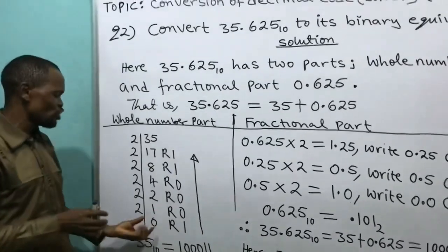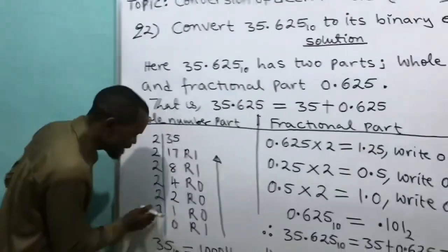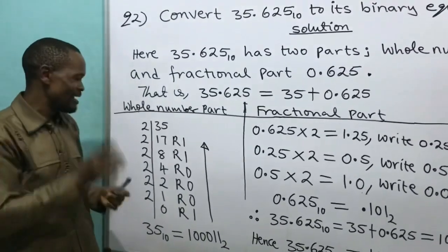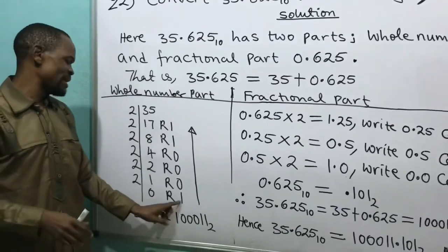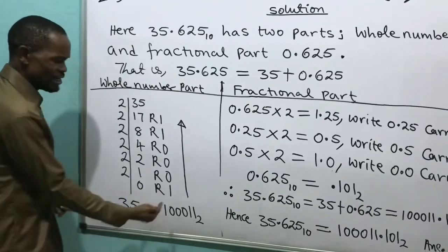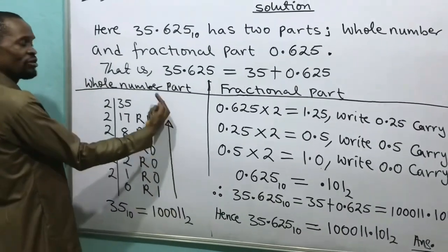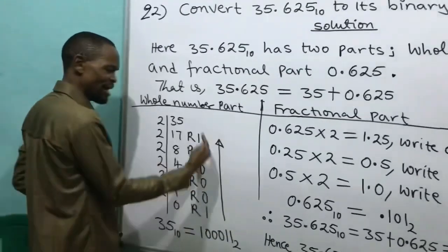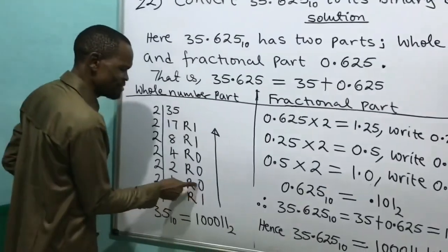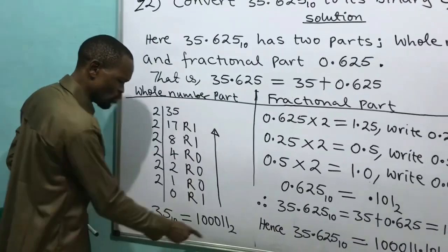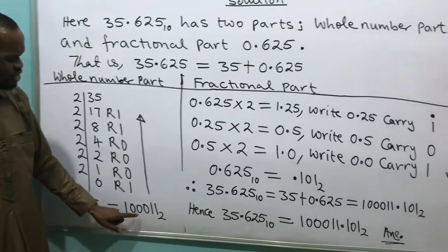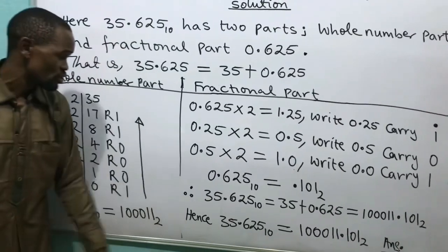I will explain: 2 divided into 1 is 0 because 2 cannot divide 1 thing, so you keep it as the remainder. The direction of reading the remainders is from bottom upward. Reading upward: 1, 0, 0, 0, 1, 1 base 2. That means my 35 base 10 equals 100011 base 2.